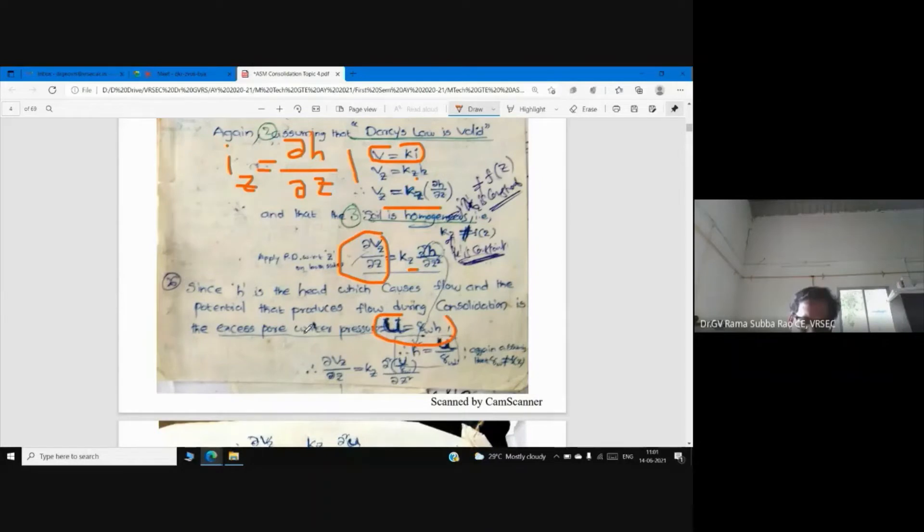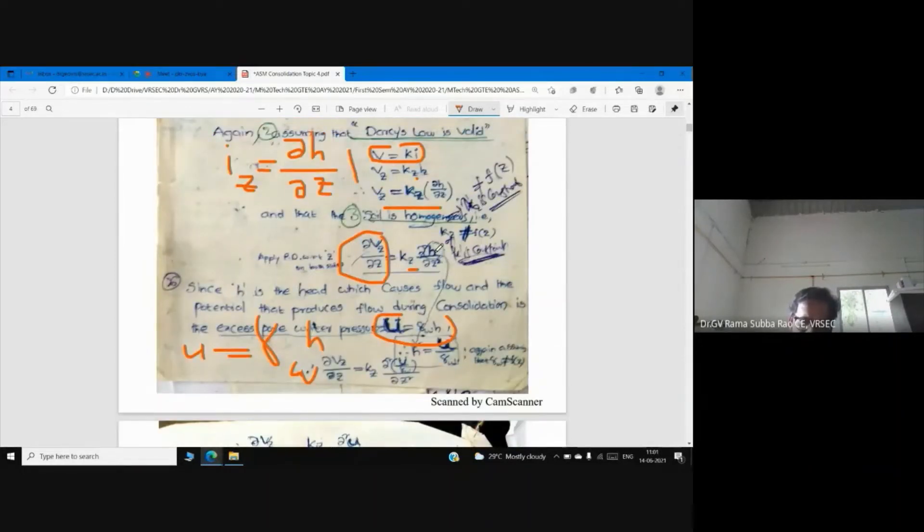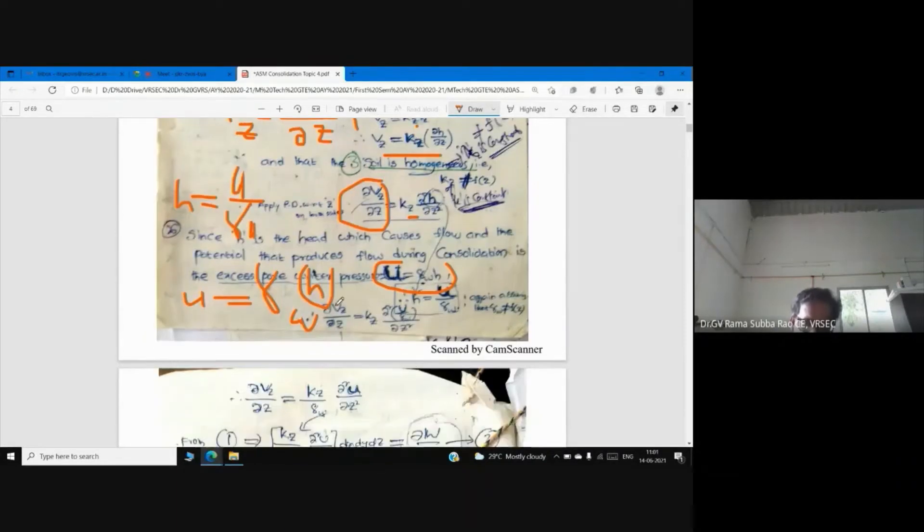Now what is pore water pressure u? Can anyone tell me? u is equal to γw times h. So now ∂V/∂z equals kz times ∂u by γw ∂z. This γw is constant. The vertical length, unless we have not specified anything, by default what we are discussing is vertical, so in terms of u.